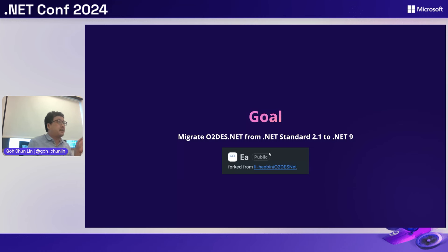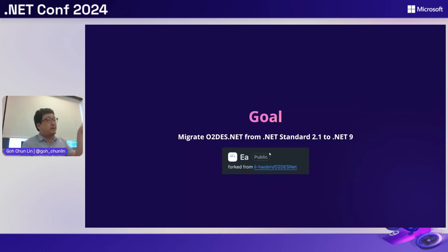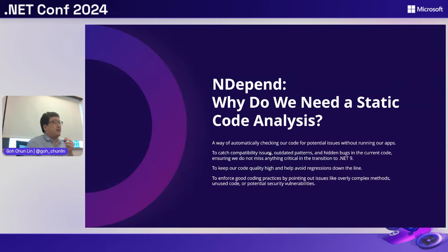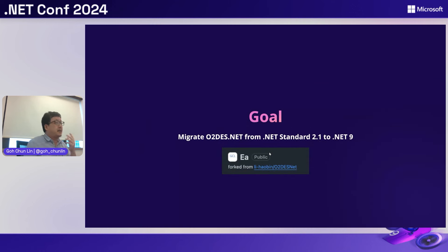Our goal is to migrate this legacy code from .NET Standard 2.1 to .NET 9. Because I'm no longer working with the team, I forked from the original AutoDES library and created a new version. During the demo you'll see AutoDES refers to the old codebase, and I renamed the new one for simplicity. It's available on GitHub so you can check it out.